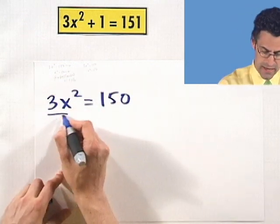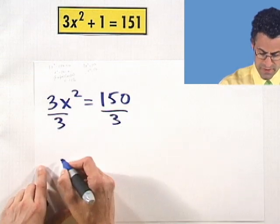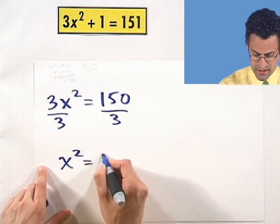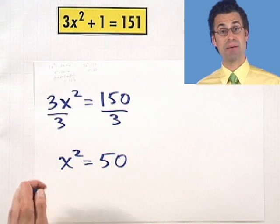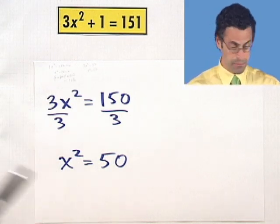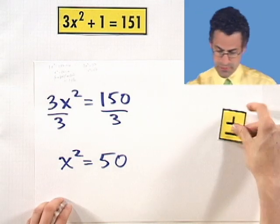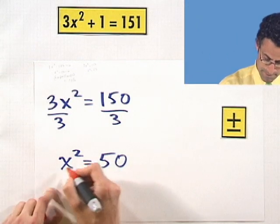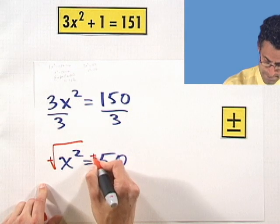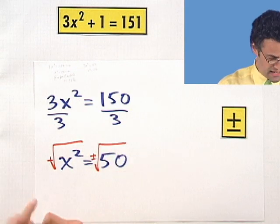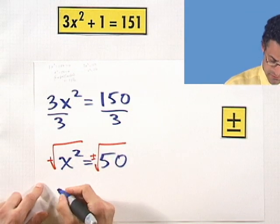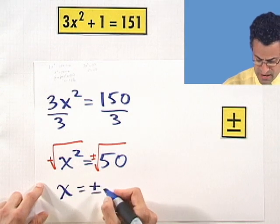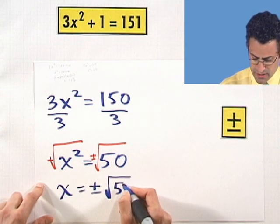If I divide both sides by 3, this reduces to x squared equals 50. And now I'm kind of back to the easy one. I could just take plus or minus, never forget the plus or minus, plus or minus the square root of both sides. And I'd see x equals plus or minus the square root of 50.